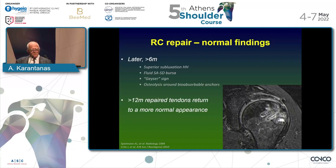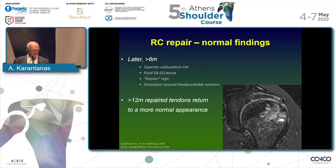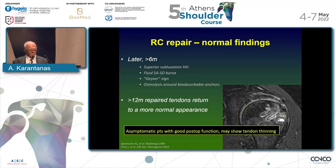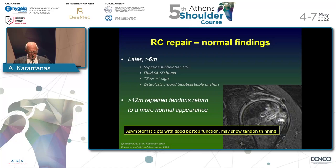The second group, after six months, presents different findings: superior subluxation of the humeral head, fluid in the bursa, the geyser sign, and osteolysis surrounding bioabsorbable anchors. After 12 months, repaired tendons return to a more normal appearance. Asymptomatic patients with good postoperative function may show tendon thinning at the distal insertion of the supraspinatus — this is not a partial tear or attenuation, but a normal postoperative appearance.